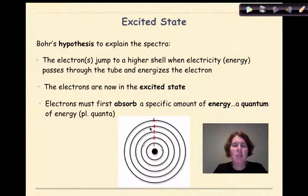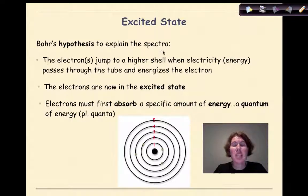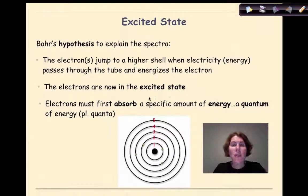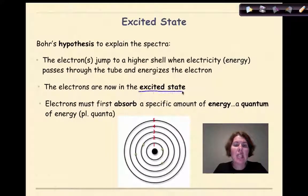Now let's talk about the concept of excited state. Bohr's hypothesis to explain the spectra is as follows. The electrons would jump to a higher shell when electricity, or energy, passed through the tube and energized the electron. When these electrons gained energy, they were known to be in the excited state.